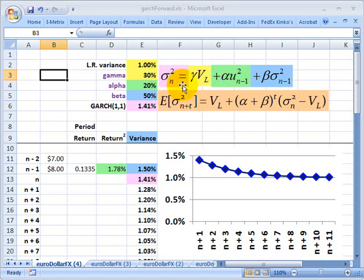The variance under the GARCH(1,1) model is a function of three terms, and that is the long-run variance, the lagged squared return. So if n is today, then u of n minus 1 would be yesterday's periodic return, and we square that.